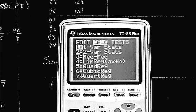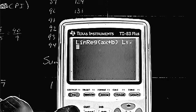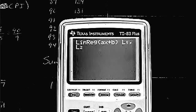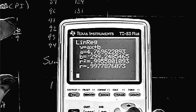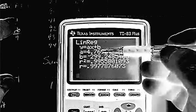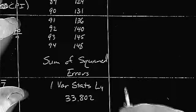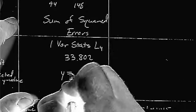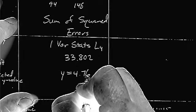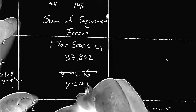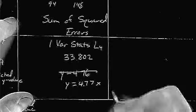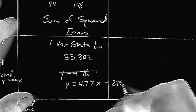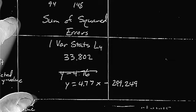So, stat, calculate, fourth one in the list, linear regression. Tell it where your lists are. List one, comma, list two, comma being above the seven. Alright. So this is the best line of fit that we can possibly come up with. So I'm going to write the slope of the y-intercept down. I'll probably round it off to the thousandths. Okay. So y equals 4.76. Oops. No, let's just go y equals 4.77. Oops. Where's my decimal? Okay. Because it rounds up. And then minus 299.249. Okay. So there's my equation.